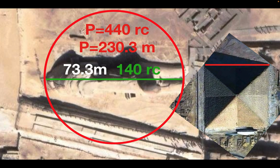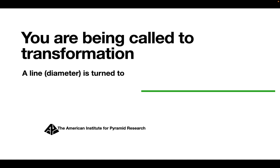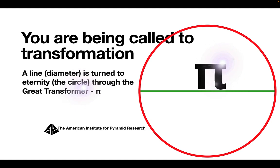The Sphinx is channeling the Great Pyramid. We're being called to transformation — a line or diameter is turned into a circle, symbolizing eternity through the transformative power of pi. The Sphinx is the key.